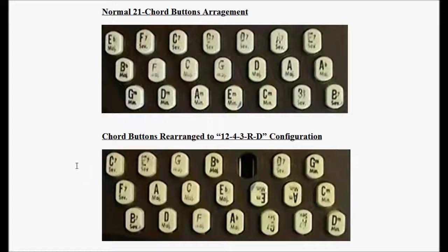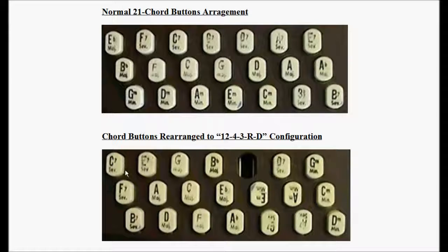In the lower half of the slide, we have the first block of 12 major, minor, seventh, and sixth chord buttons arranged in ascending fourths: C sharp major, F sharp major, B, E, A, D, G, C, F, B flat, E flat, and A flat. I've made use of the available buttons as best I could. We have buttons for G, C, F, B flat, E flat, A flat, A, and B major. Because we don't have buttons for C sharp, F sharp, B, and E major, I'm using the seventh buttons for C seventh, F seventh, B seventh, and E seventh respectively.